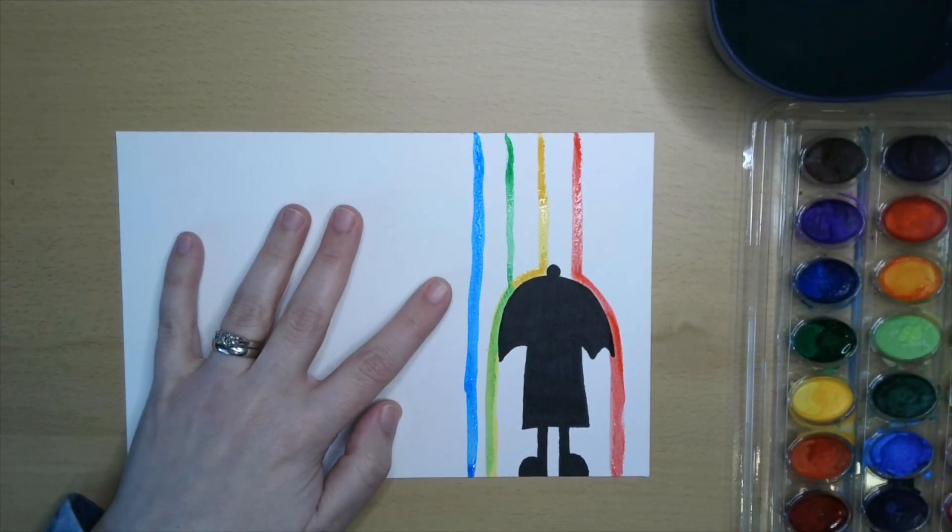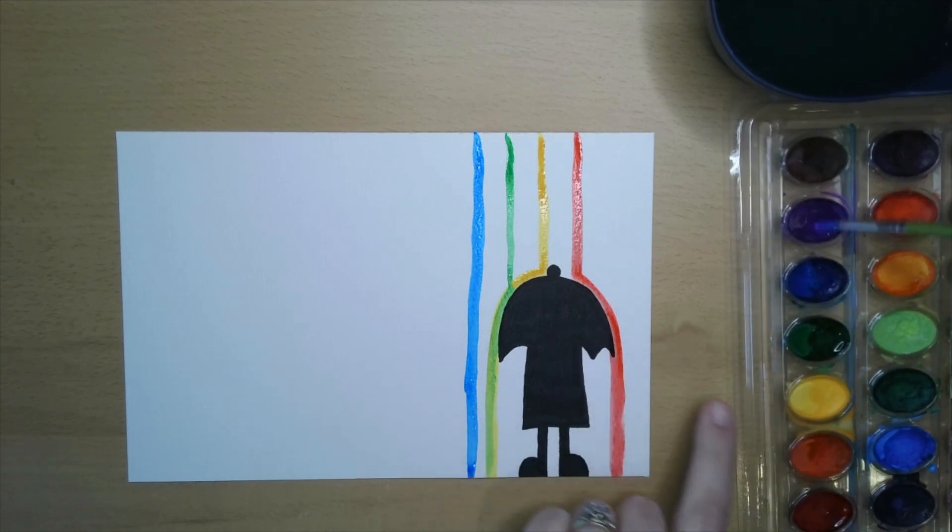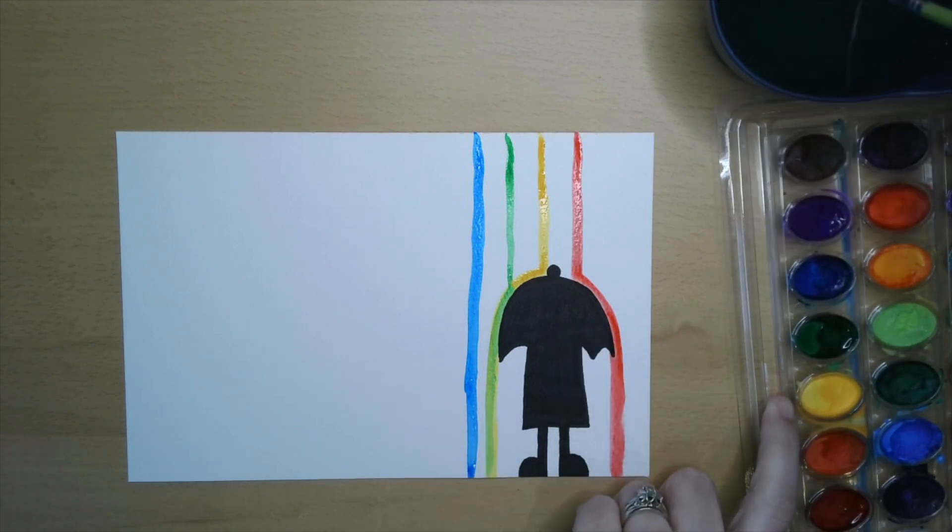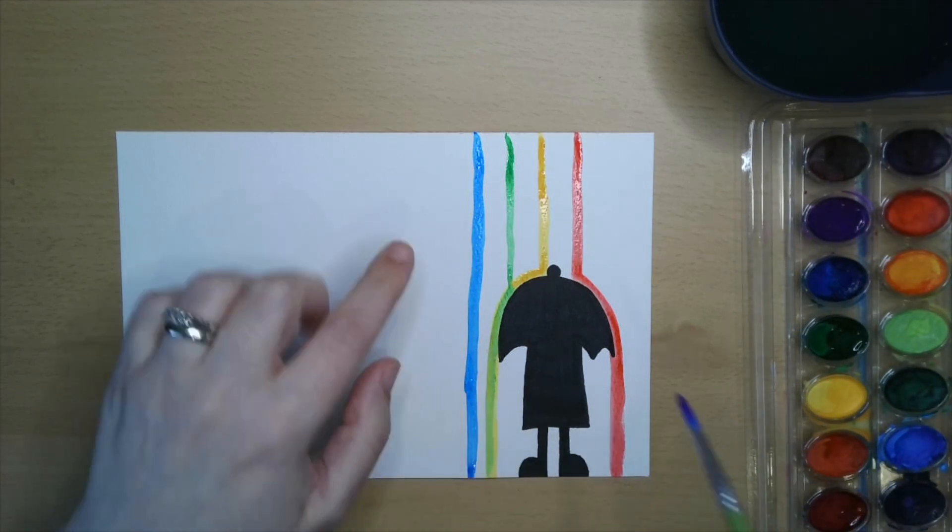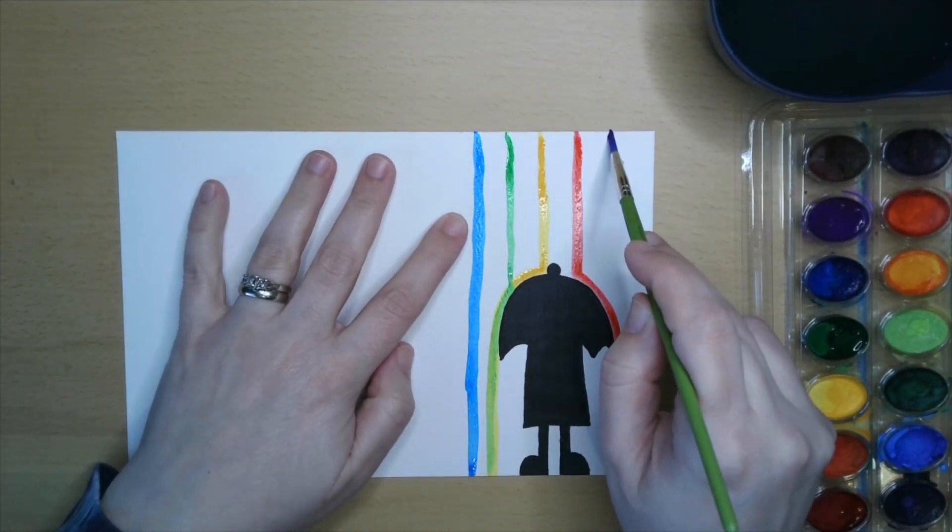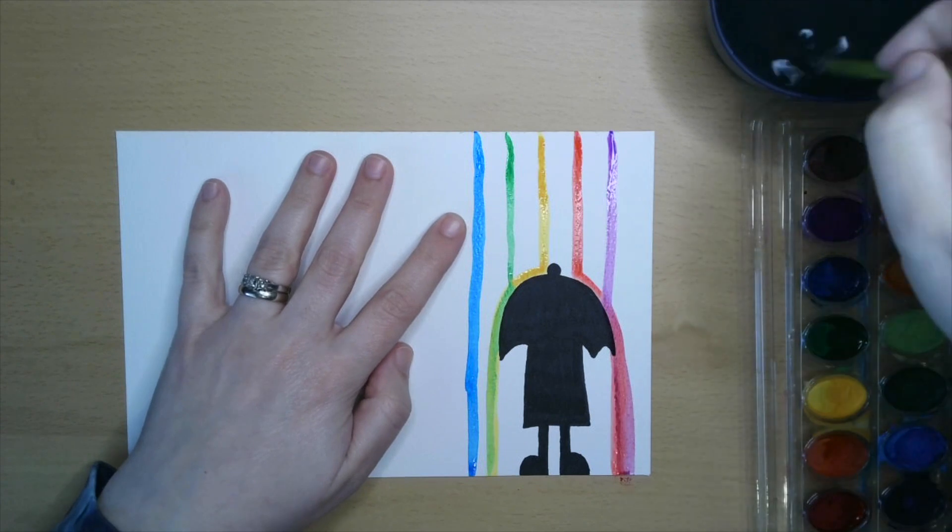And then, maybe I'll do purple. Ooh, purple is a good color to go with red. Because remember, it's gonna hit the umbrella and mix together a little bit. But that's okay, that's what we want. It will look really artsy and colorful and beautiful. So I'm gonna do a straight line down all the way to the umbrella, and then slide off the umbrella to the ground. There!